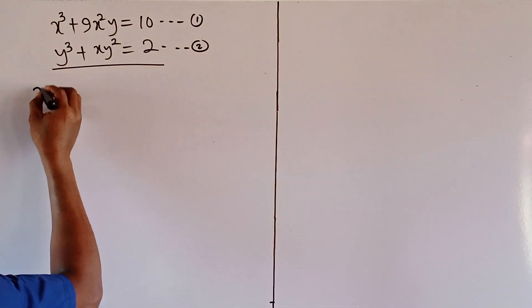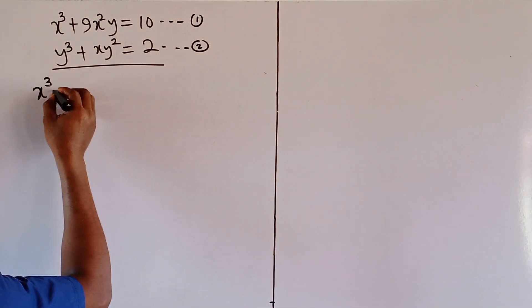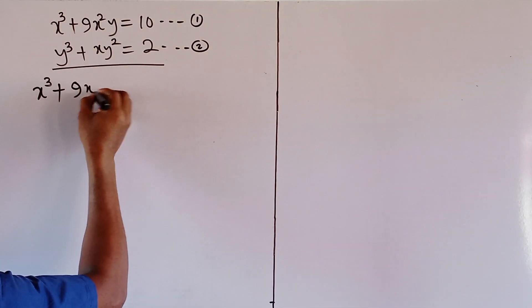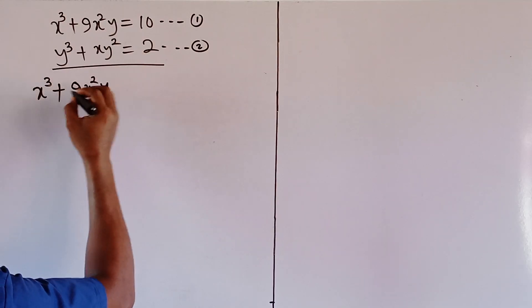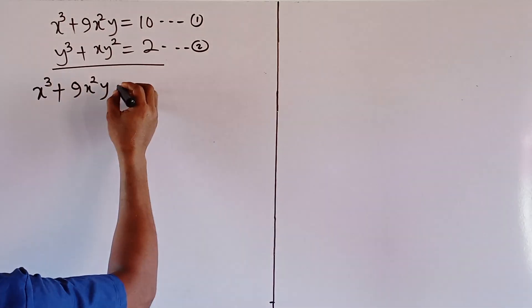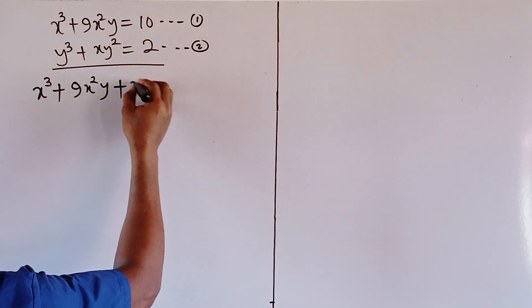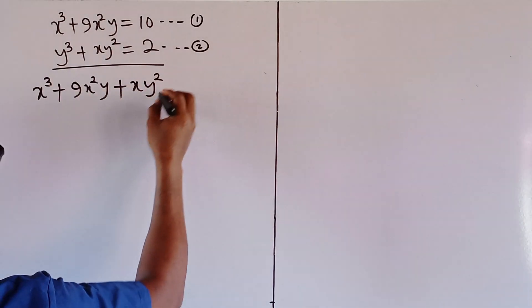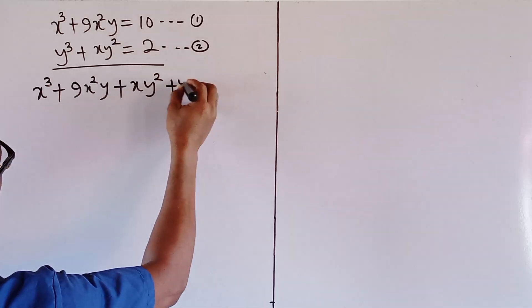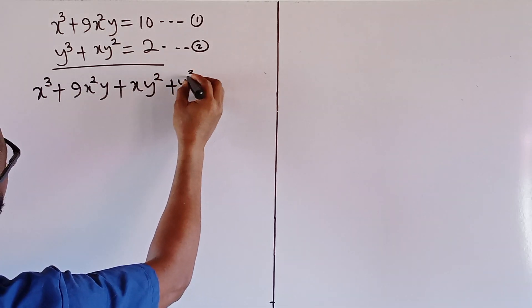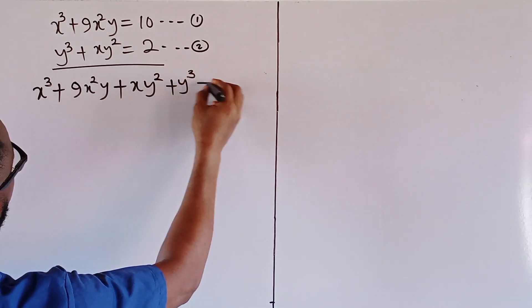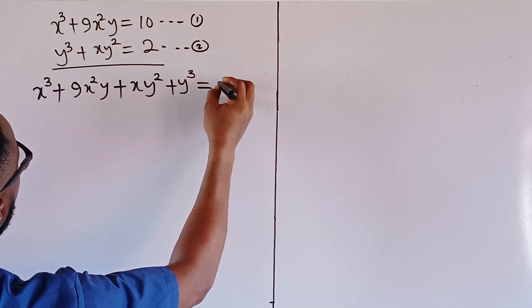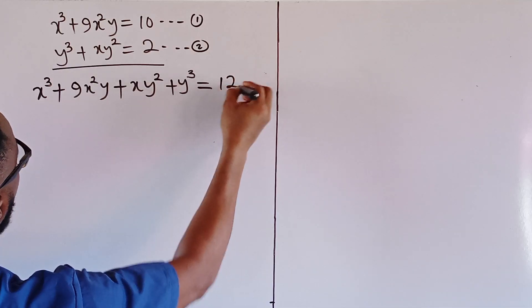So I'll start with x cubed, plus 9x squared y, plus xy squared, plus y cubed. Then on the right side I have 10 plus 2, which is 12.